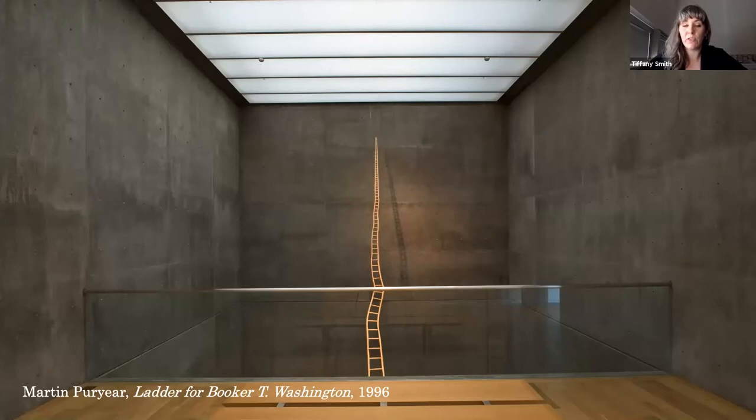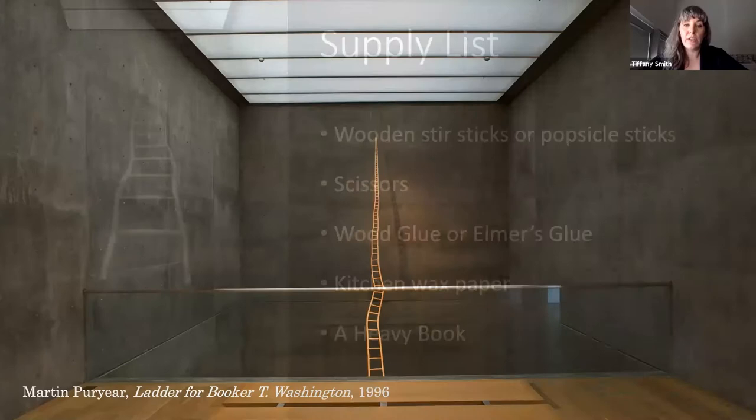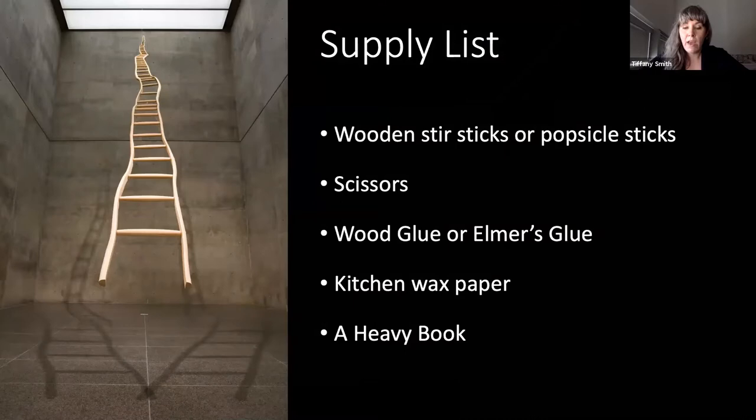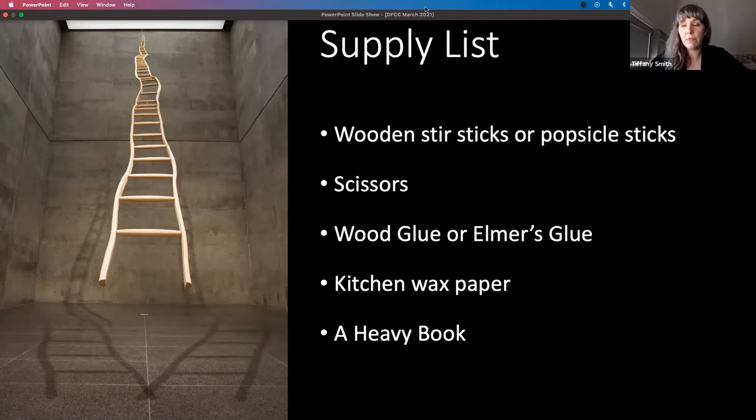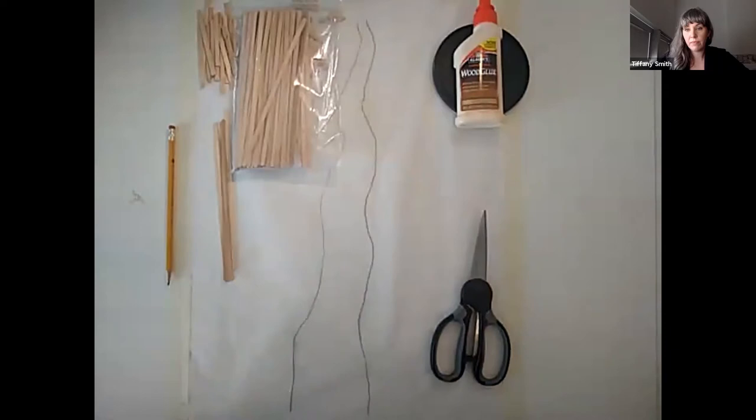Sweet. Yeah. Booker T. Washington was an important fellow and somebody that Martin Puryear was really interested in keeping in our history, in our periphery. So Jen is going to work on a project with us today. So here's a list of the supplies y'all will need to gather if you haven't already. And we're going to switch over control to Jen so she can walk you step by step through a Ladder for Booker T. Washington Ladder.